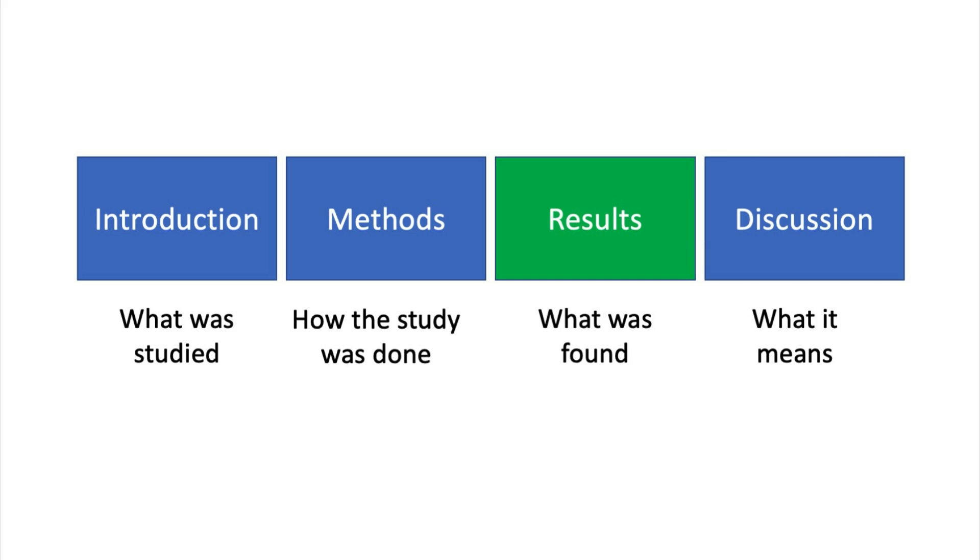The results section is a major part of a scientific paper and is important because it shows what you found in your study. It is usually the third major section just after the methods and before the discussion.